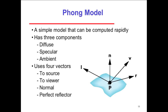Here's the Phong model — a simple model that can be computed rapidly and is supported in OpenGL. It has three components: diffuse, specular, and ambient. These are different types of light we apply. We have four different vectors: to the source, to the viewer, the normal, and the perfect reflector.